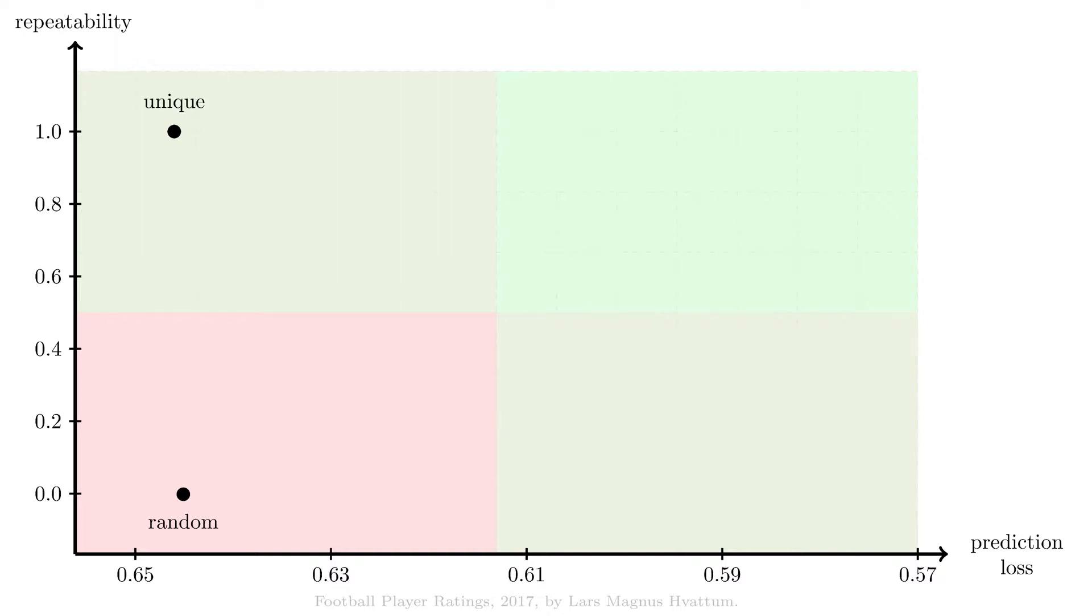As a third benchmark, only valid for the prediction loss, we can calculate the prediction loss that would be obtained by using the best odds from the betting market. These are likely quite efficient and should be quite a bit better at predicting the actual outcome than our so far very naive player ratings.